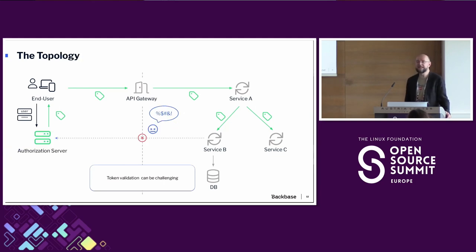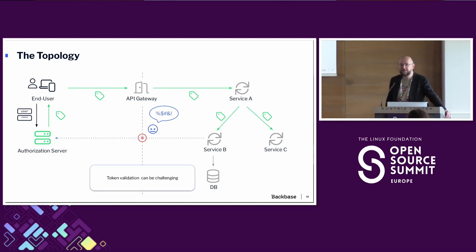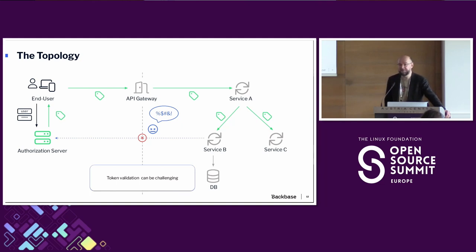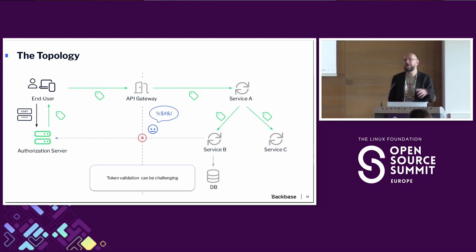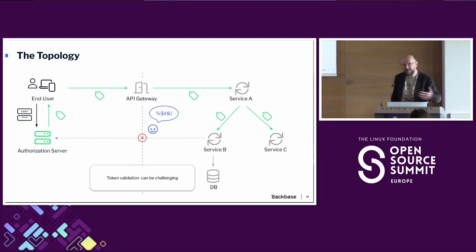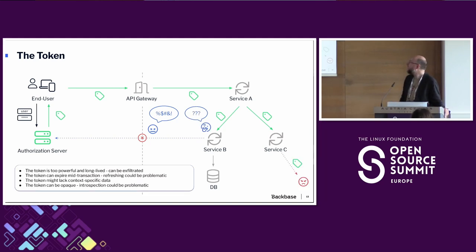The next problem is topology and connectivity. Validating an external access token requires some sort of connectivity between the verifier and the issuer. If it's an opaque token, you need to do an introspection call. If it's a signed token, you need a keyset — a public key from the issuer. You can grab the keyset and cache it, but those keysets could be frequently rotated, which is a good practice, so it adds another layer of complexity.